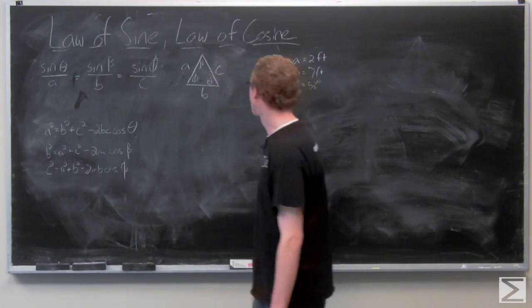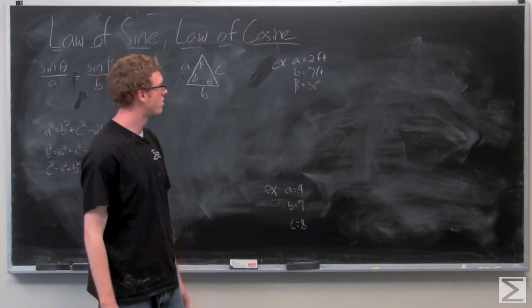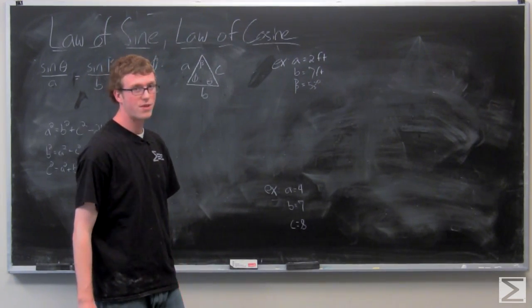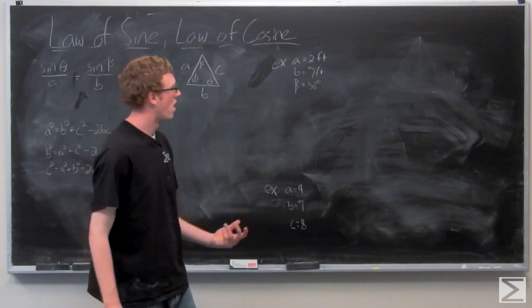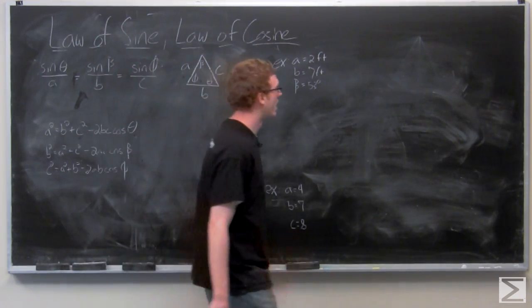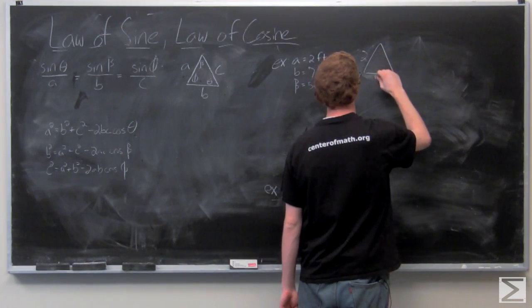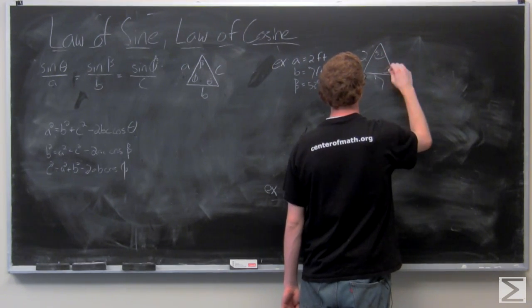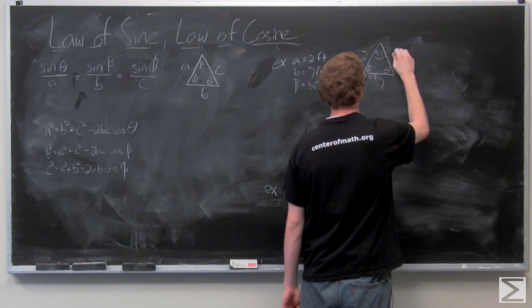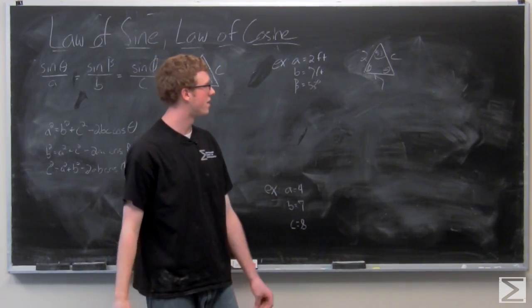So there's a couple examples here. Given a equals two feet, b equals seven feet, and beta equals 53 degrees. I'm just going to go ahead and draw out that triangle so it's easy to visualize. So we want to find theta, phi, and c.